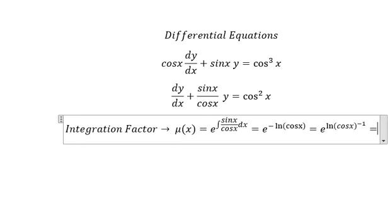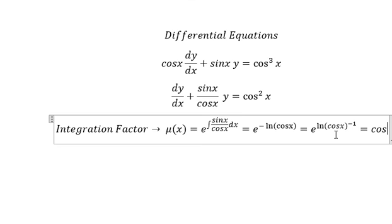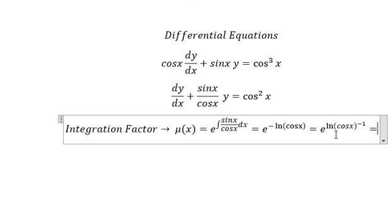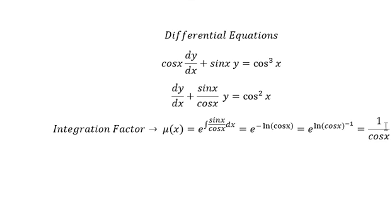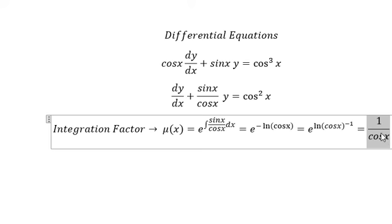So we get 1 over cosine x. That means we will multiply both sides with 1 over cosine x.